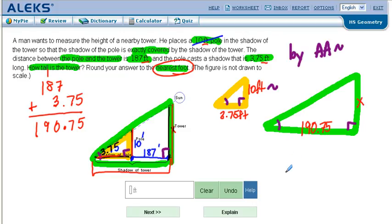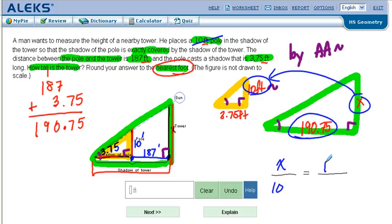So since they are similar we can do a proportion. And our proportion is going to be x over 10 feet. You can do 10 feet over x if you want, just be consistent. I'm going to go x over 10 feet equals 190.75 over 3.75.